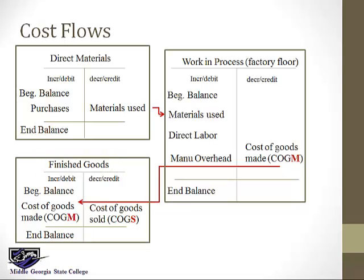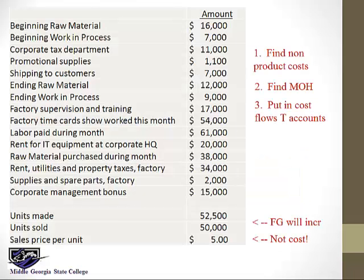Let's work a problem to practice these. Freeze the frame or print the frame for yourself and we will walk through them together. The first thing I want to do is remove the non-product costs, because I already see something like the corporate tax department. Then I'm going to find the manufacturing overhead and add up all those items to get the total. Then I'm going to put all of these things in the T-accounts to figure out cost per unit and then cost of goods sold.